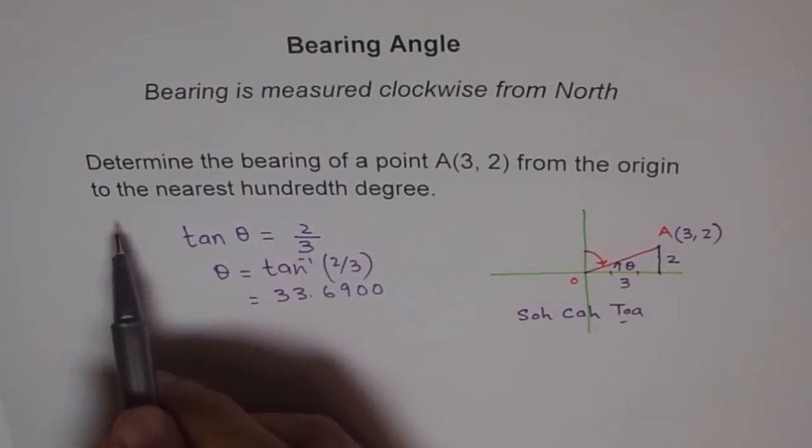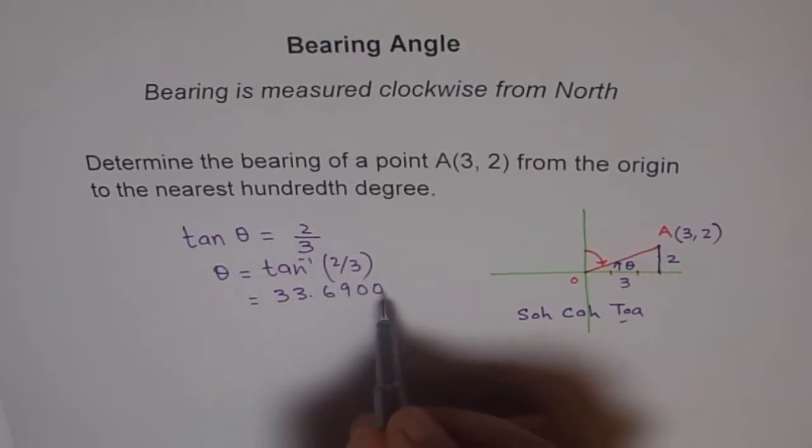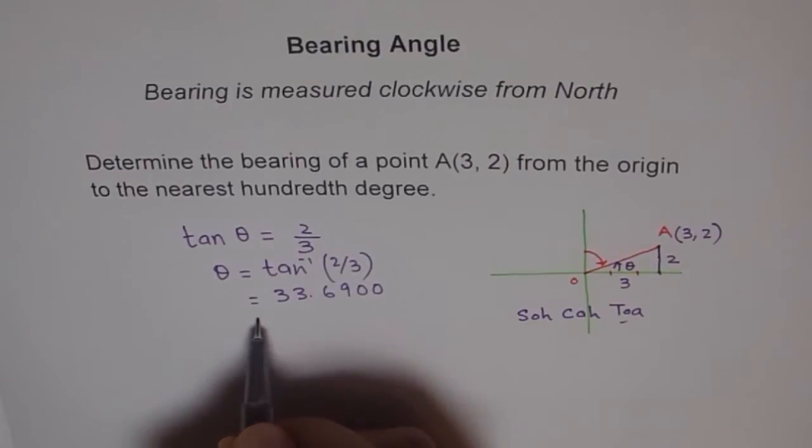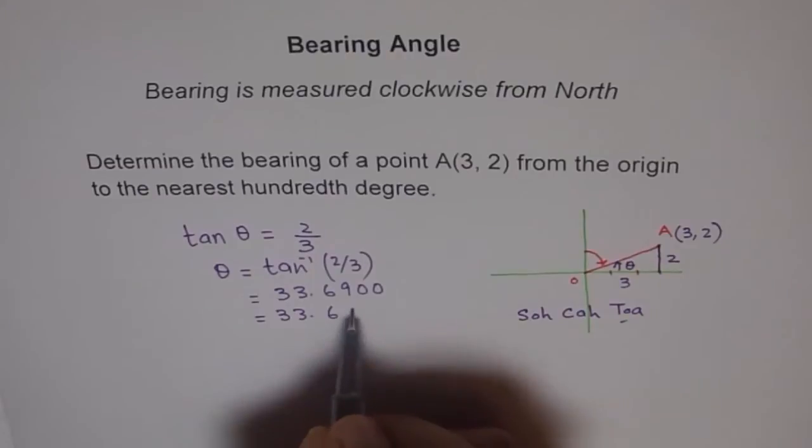Now we need to round it to the nearest hundredth of degrees. That's good enough. So hundredth of the degree is 33.69.